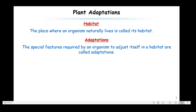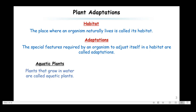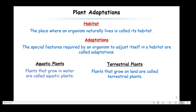Then we have adaptations. Special features required by an organism to adjust itself in a habitat are called adaptations. Every plant is different from another because they have to survive in different climatic conditions, so they develop special features — those special features are called their adaptations. We have two types of plants: plants that grow in water bodies are aquatic plants, and plants that grow on land are called terrestrial plants.